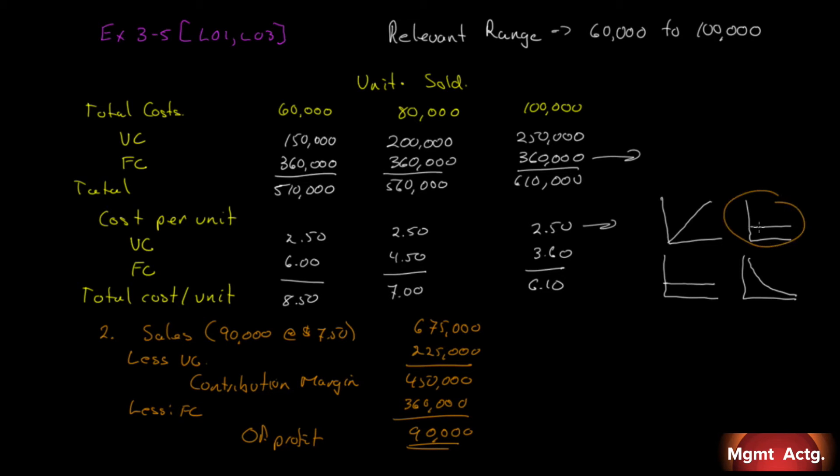And that is our operating profit. Remember, you want fixed costs, variable cost per unit. Notice that these are both straight lines. So we don't have to go to the fixed cost per unit because it's not a straight line anymore. And that takes care of exercise 3.5.